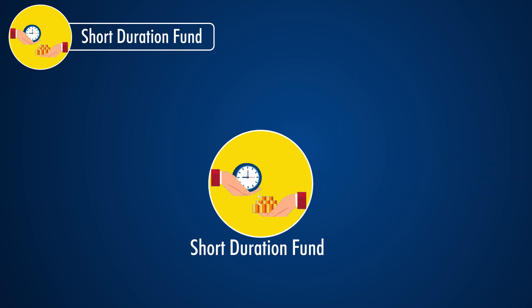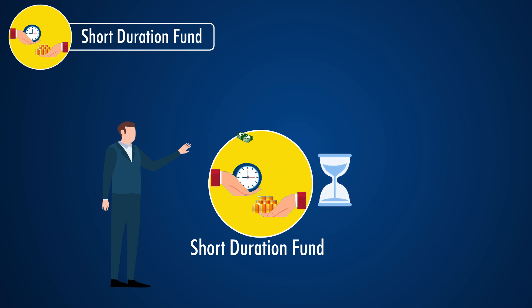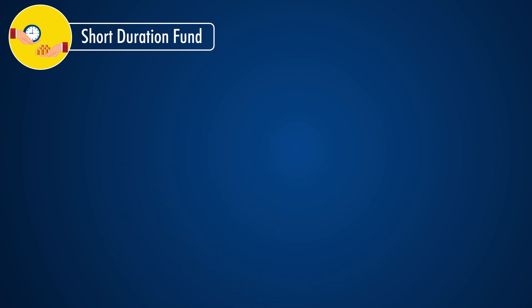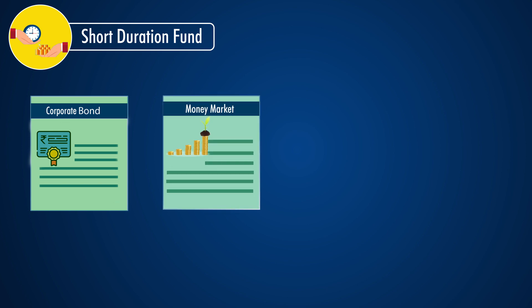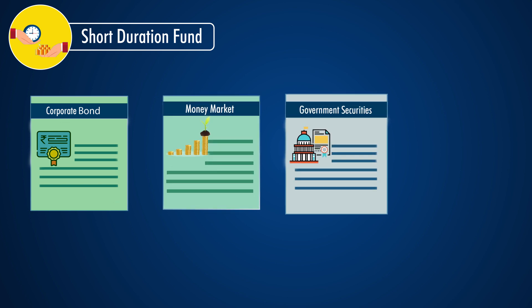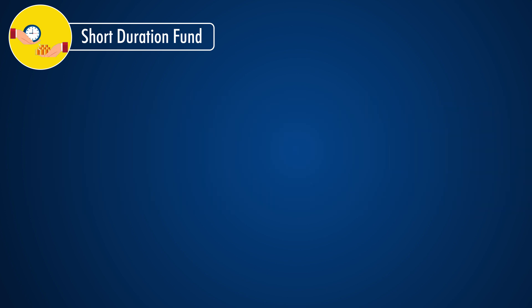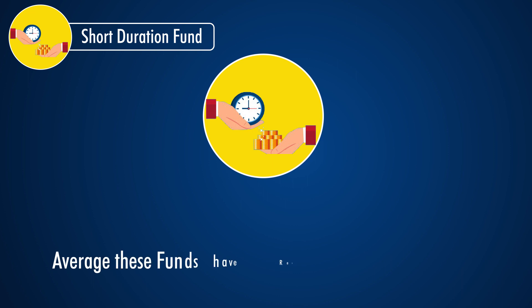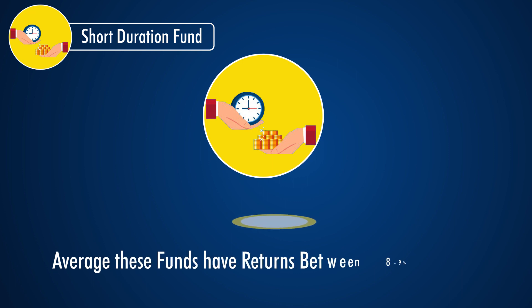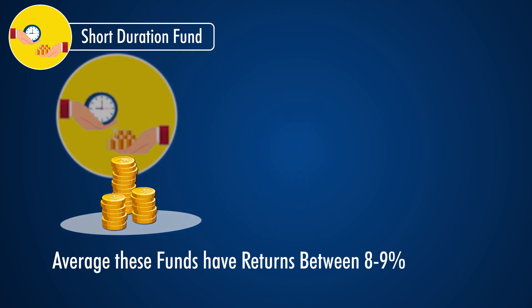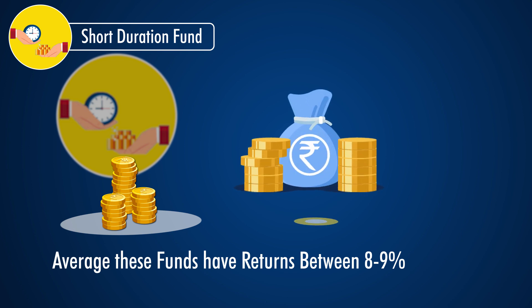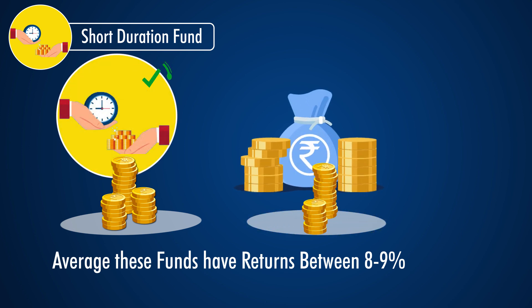Short duration funds invest a majority of their corpus in instruments such as short-term corporate bonds, money market instruments, government bonds, and treasury bills. On average, these funds have returns between 8-9% depending on the fund, making them a better investment option than a standard fixed deposit.